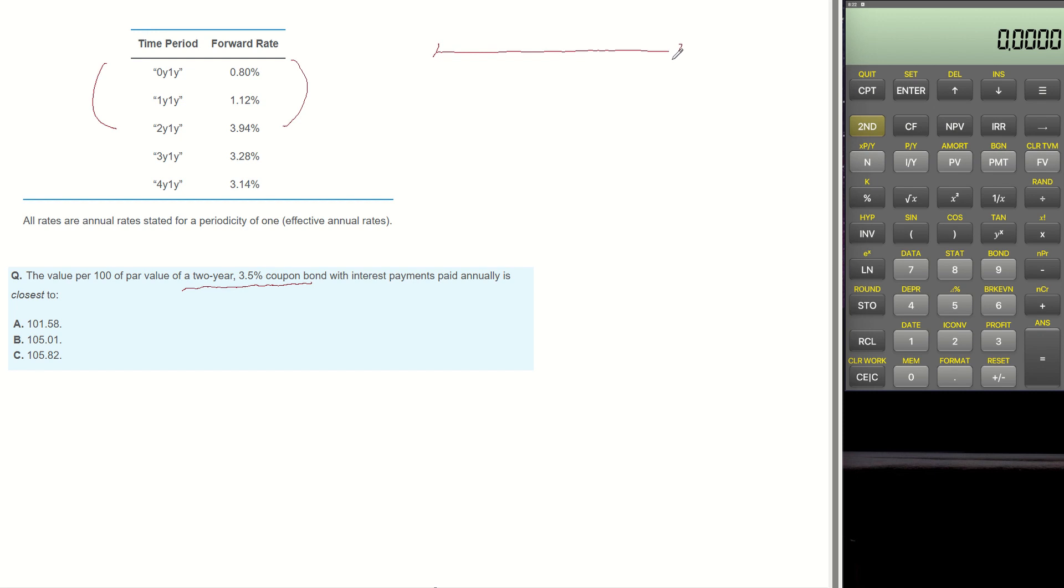From the time periods, the first time period can be set as 0-year into 1-year forward rate is 0.8%. Second period is 1-year into 1-year forward rate is 1.12%.